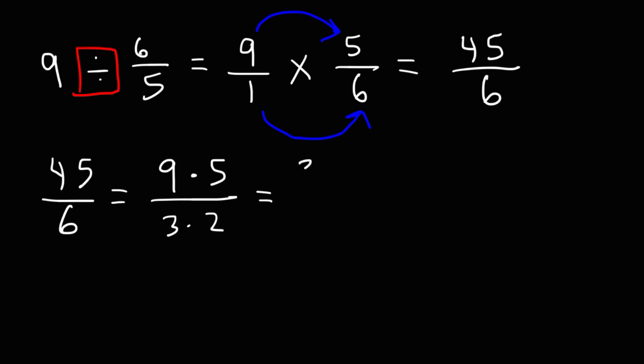9, we can write 9 as 3 times 3. Because 3 times 3 is 9. So we have this. Notice that we could cancel a 3. So we're left with 3 times 5, which is 15, over 2. So this right here is the final answer for the second example.